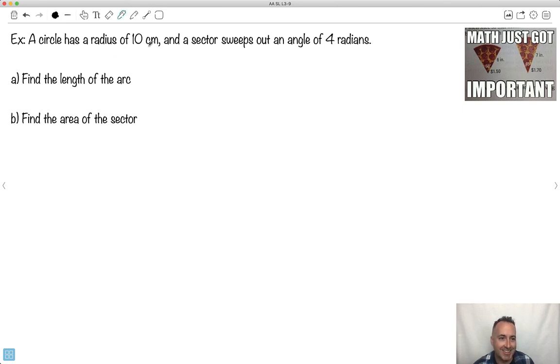So a circle has a radius 10. We have a sector and it sweeps out an angle of four radians and they didn't give us a diagram. I think what'll help is to start by doing that diagram. So let me just draw a circle. There we go, like this. Let's attempt to draw what is going on here.